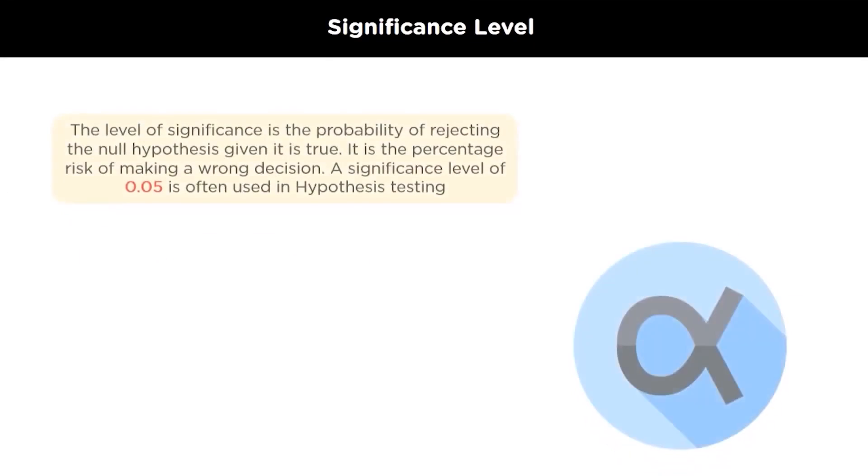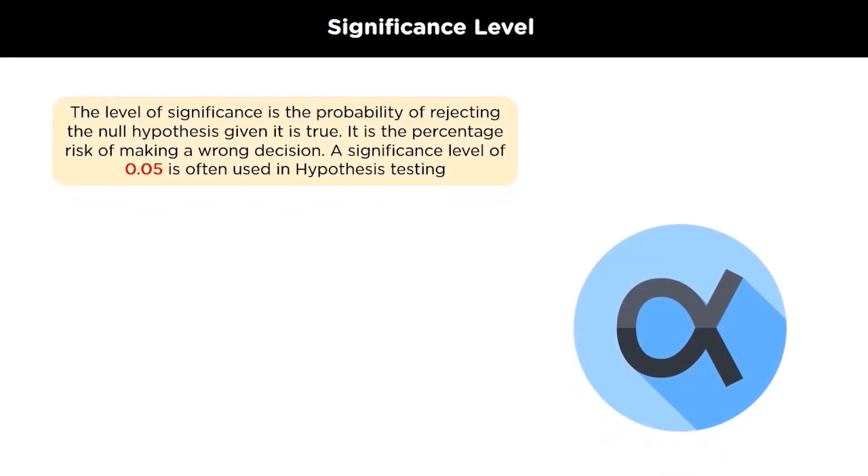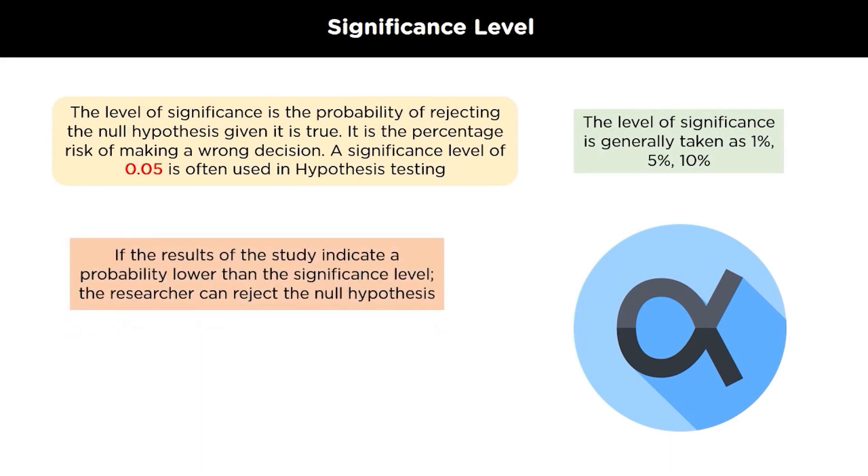Now we will discuss what a significance level is. Level of significance or significance level refers to a criterion of judgment upon which a decision is made regarding the value stated in the null hypothesis. This criteria is based on the probability of obtaining a statistic measured in a sample if the values stated in the null hypothesis were true. Generally, the criterion of the level of significance is typically set at 5 percent or 0.05. This value of significance level can also be taken as 1 percent or 10 percent depending upon your requirement.